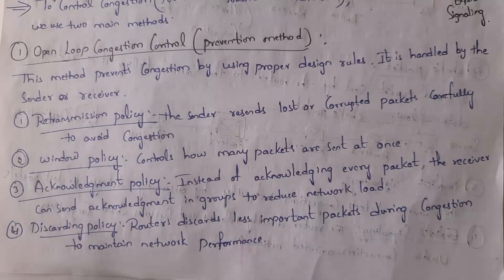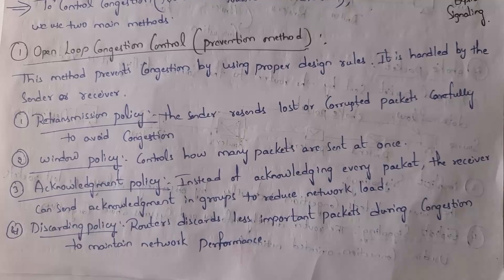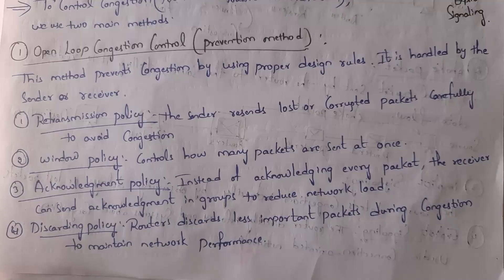The first technique is retransmission policy. The name itself says retransmission — that means if data is lost or corrupted, the sender will send that same data again. The second one is window policy. If many packets are sent at once then congestion will occur, and in order to overcome this problem we can use window policy.